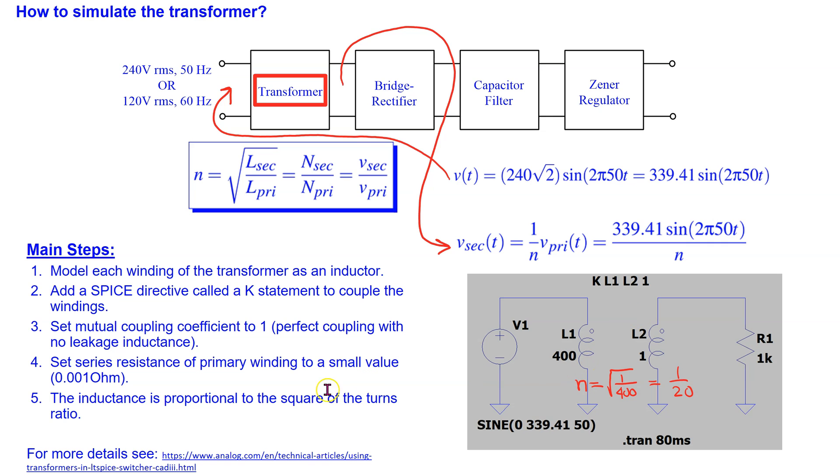We also need to set the resistance of the primary winding to a very small value. This is to enable LTSpice to solve and simulate the circuit. Otherwise, we get an error. Once the K statement is applied, LTSpice automatically changes the normal inductor symbol to an inductor symbol with a visible phasing dot shown here, and this indicates each winding's phase.